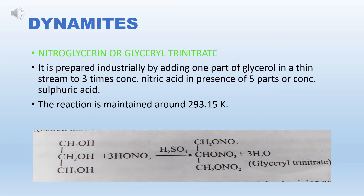Dynamite is prepared industrially by adding one part of glycerol in a thin stream to three times of concentrated nitric acid in the presence of five parts of concentrated sulfuric acid. The reaction mixture is maintained around 20 degrees Celsius. When glycerol trinitrate is heated rapidly it explodes violently giving oxygen, nitrogen, carbon dioxide and steam. The total volume of gases released is about 11,000 times the volume of glycerol trinitrate. Nowadays dynamite is prepared by absorbing glycerol trinitrate on sawdust and adding ammonium nitrate to it.